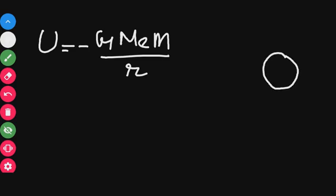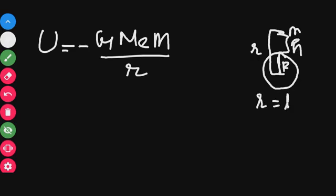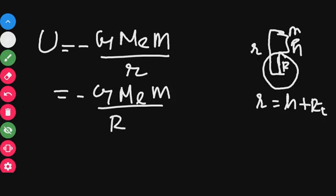You have the Earth and the radius of the Earth R_E. The mass is at distance R from the center, and this R is equal to H plus R_E — that is, the height H plus the radius of the Earth. So the formula becomes minus G M_E M divided by R_E plus H.